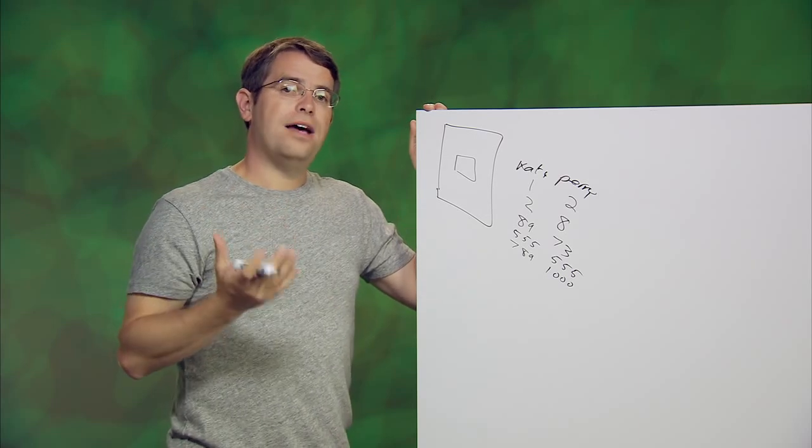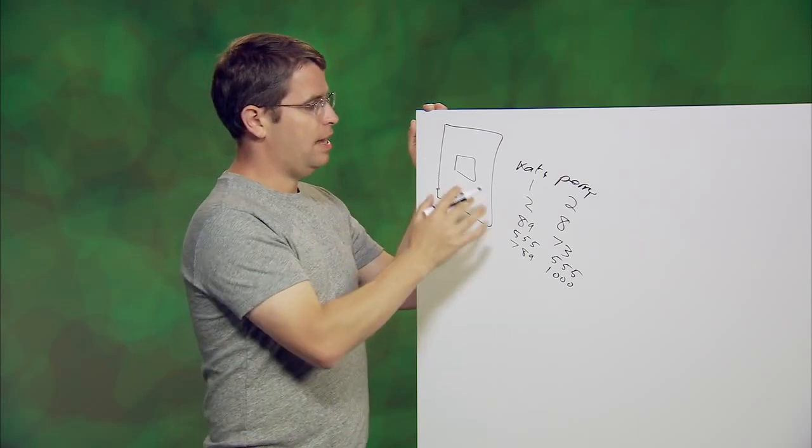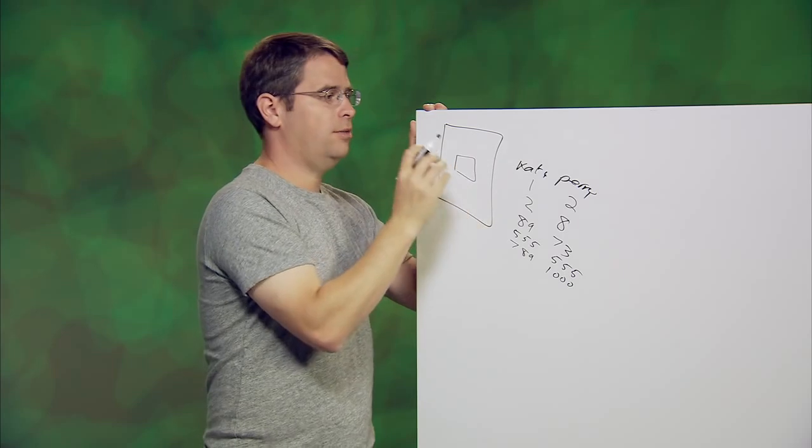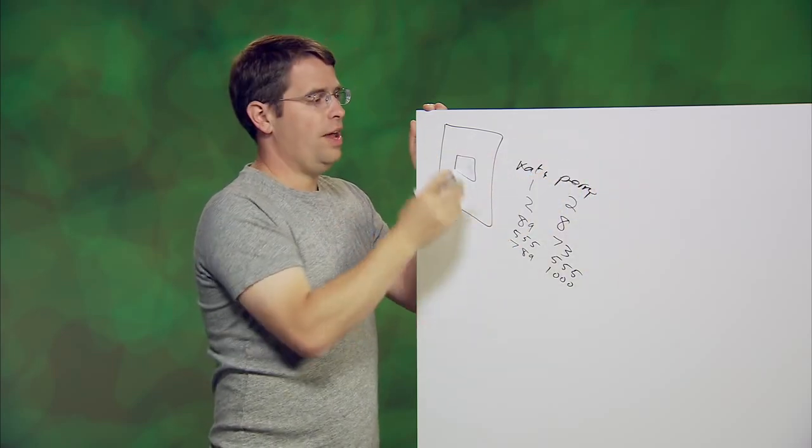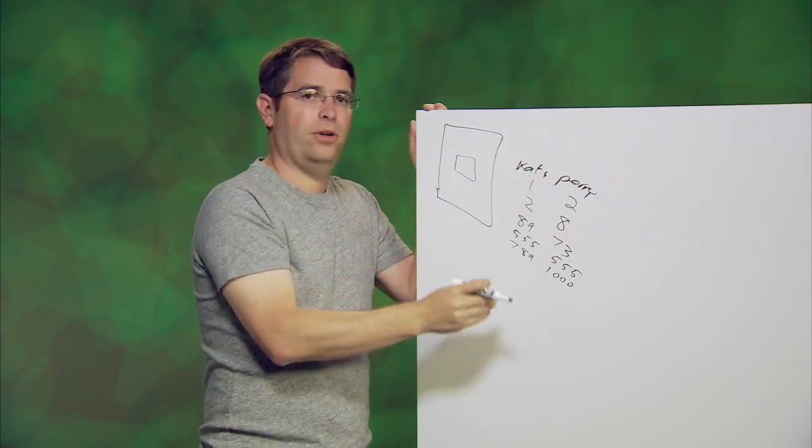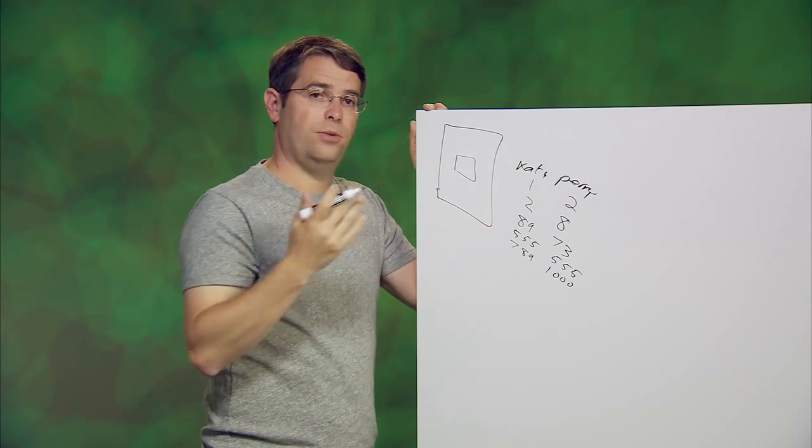And so the whole process of doing the index is reversing so that instead of having the documents in word order, you have the words, and they have it in document order. So it's, okay, these are all the documents that a word appears in.